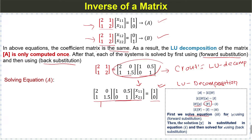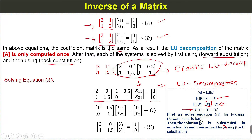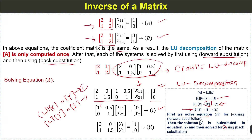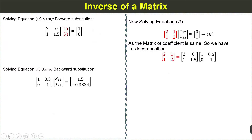First we solve equation 2 for Y using forward substitution. We multiply the first row of L with the column matrix Y, and then the second row with the column matrix, setting it equal to the identity column. After multiplication, we obtain equation A and equation B from the forward substitution process.